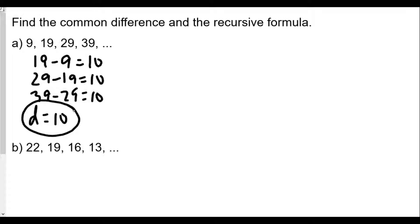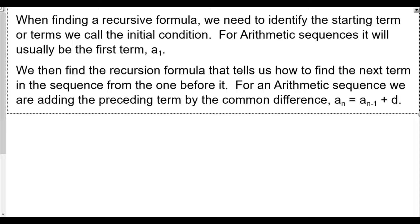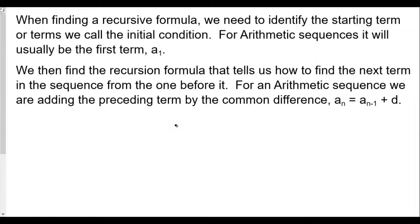But how do we find the recursive formula? When finding the recursive formula, we need to identify the starting term — what we call the initial condition. For arithmetic sequences, it will usually be the first term. So A1, our first term, will be the initial condition.